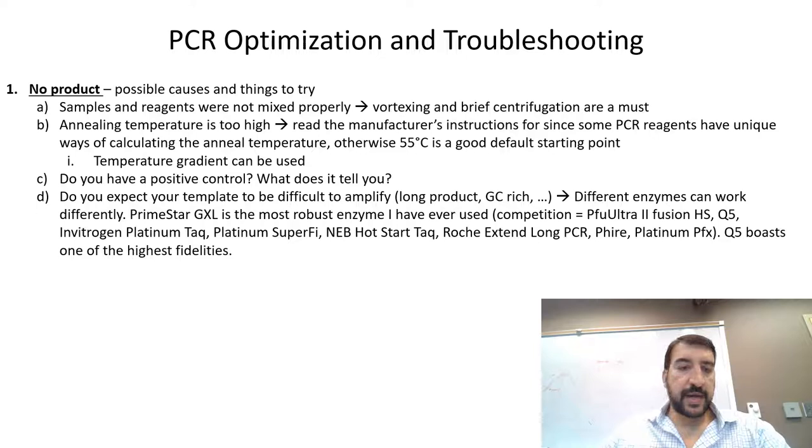For example, Primestar GXL is the most robust enzyme I've ever used for amplifying long pieces of DNA for cloning. Q5, on the other hand, boasts one of the highest fidelities, but in my hands, is not as robust as Primestar GXL.